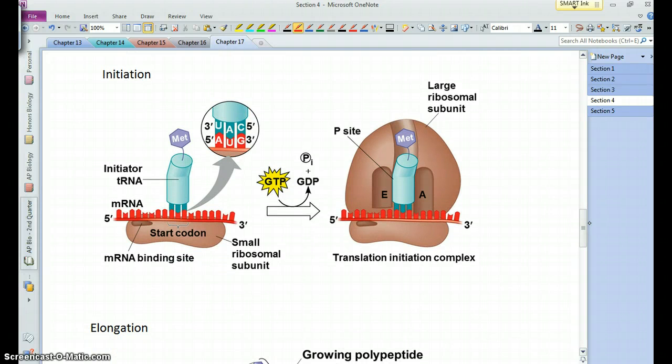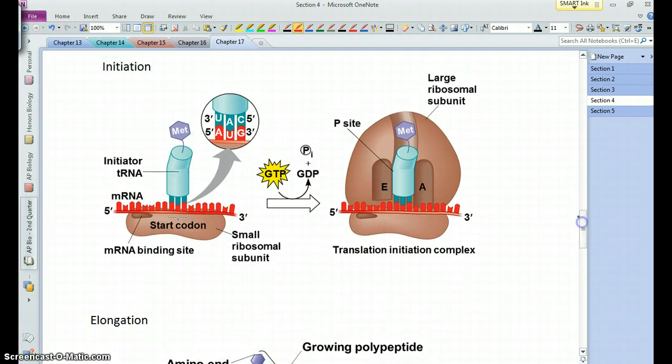The correct anticodon on the tRNA has to match up with the codon on the mRNA. Initiation is when all these players first get together. The small subunit, the large subunit, the mRNA, the first tRNA, which is going to code for our first amino acid, which will be methionine, that start codon.